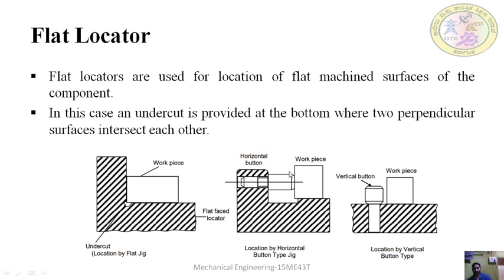In case of supporting a horizontal workpiece, we use buttons. These buttons have a flat surface. Since this workpiece is machined, it will firmly grip into the machined surface and there will be more contact between the button and the workpiece. Because it is flat, the area of contact between the button and the workpiece will be large. This is available only if there is a machined surface. When the machined surface is horizontal, we use a horizontal button; similarly, if the workpiece has a vertical machined surface, we use a vertical button.